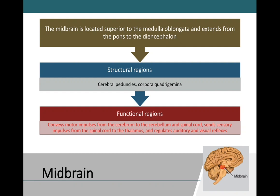The midbrain is the third part of the brainstem, found just above the pons and just below the diencephalon. It also serves as a major highway for sensory and motor information. Within the midbrain are sub-regions known as the cerebral peduncles and the corpora quadrigemina. Aside from controlling certain visual and auditory reflexes, the midbrain serves the same relay function as the pons and medulla, all together comprising the brainstem.